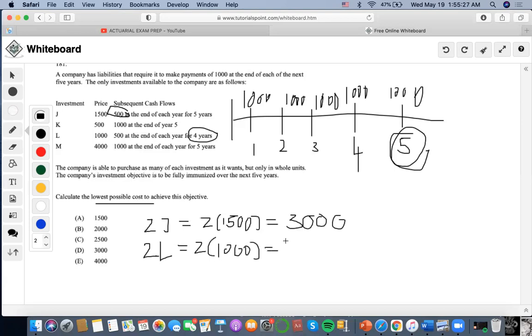And then 500, and then it could coincide with a thousand that's covered at the end of year five. So plus K, which would be 2500 in total for this bunch.